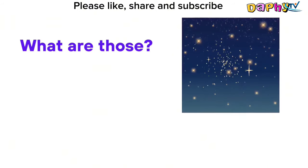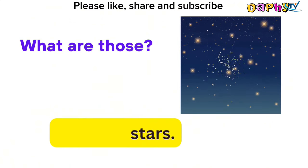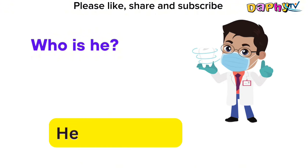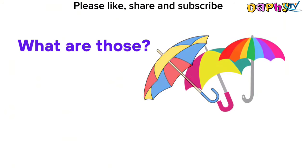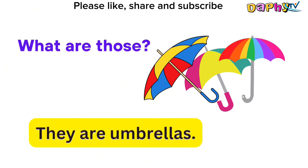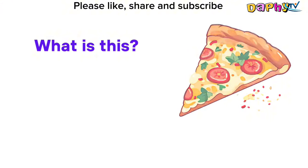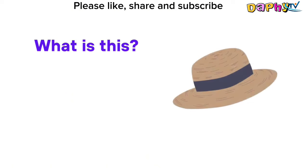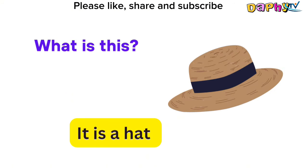What are those? They are stars. Who is he? He is a dentist. What are those? They are umbrellas. What is this? It is a pizza. What is this? It is a hat.